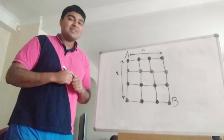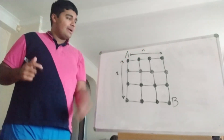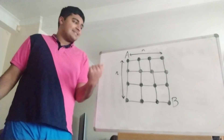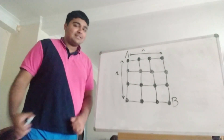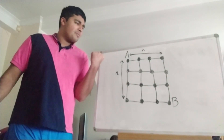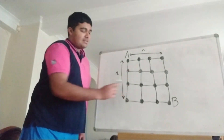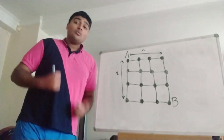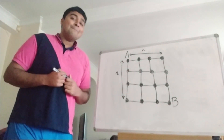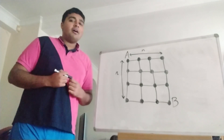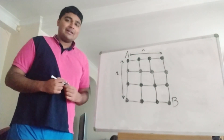Suppose we have a lattice of points and on it we draw an n by n square. The top left vertex is A and the bottom right vertex is B. We want to travel from A to B but we can only travel along the edges of the lattice, and we want to ask what is the maximum path length from A to B so that we remain within this square.